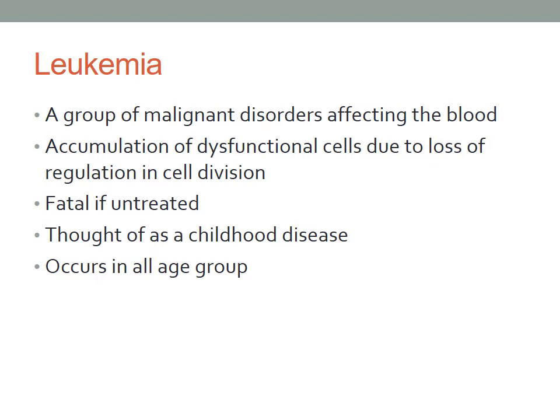The white blood cells of the body are usually produced based on the body's needs and in an orderly fashion. With leukemia, abnormal poor functioning white blood cells are produced. These white blood cells are not able to fight infections effectively.